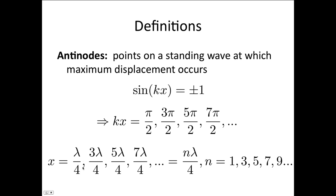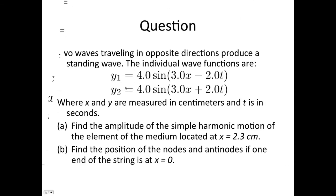Now, we'd expect these antinodes to be halfway between the nodes, and they are. The first node was at 0, the second node was at λ/2, and λ/4 is exactly halfway between those two nodes.